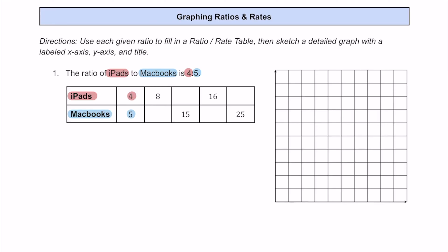We're given this original ratio of 4 to 5, where 4 represents the number of iPads and 5 represents the number of MacBooks. To figure out the number of MacBooks when there are 8 iPads, we can set up a ratio: 4 to 5 originally, and now 8 iPads on top. Since 4 times 2 gets you 8, on the bottom 5 times 2 gives us 10 MacBooks. So we put 10 MacBooks here — the ratio 4 to 5 is equivalent to 8 to 10.